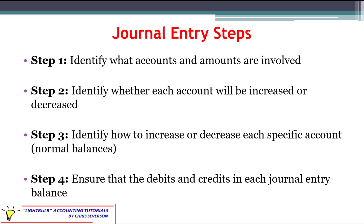The journal entry steps we're using here: first, identify what accounts and what amounts are involved — we analyze the transaction. Then identify whether each account will be increased or decreased. Step three is the integral piece: identify how to increase or decrease each specific account by analyzing the normal balances. And then step four as a check, ensure that the debits and credits in total for each journal entry balance out.